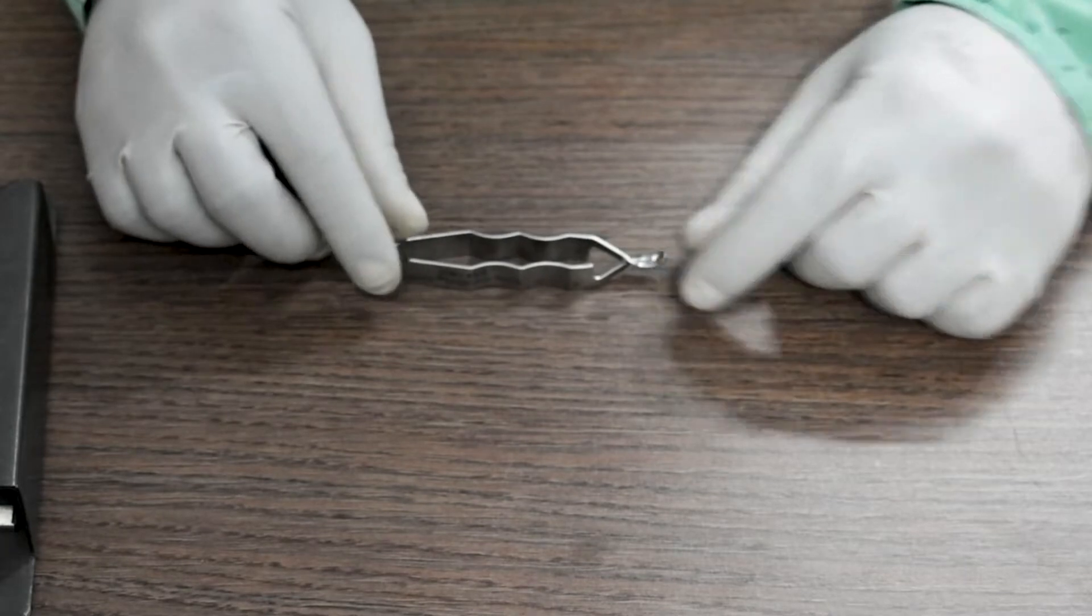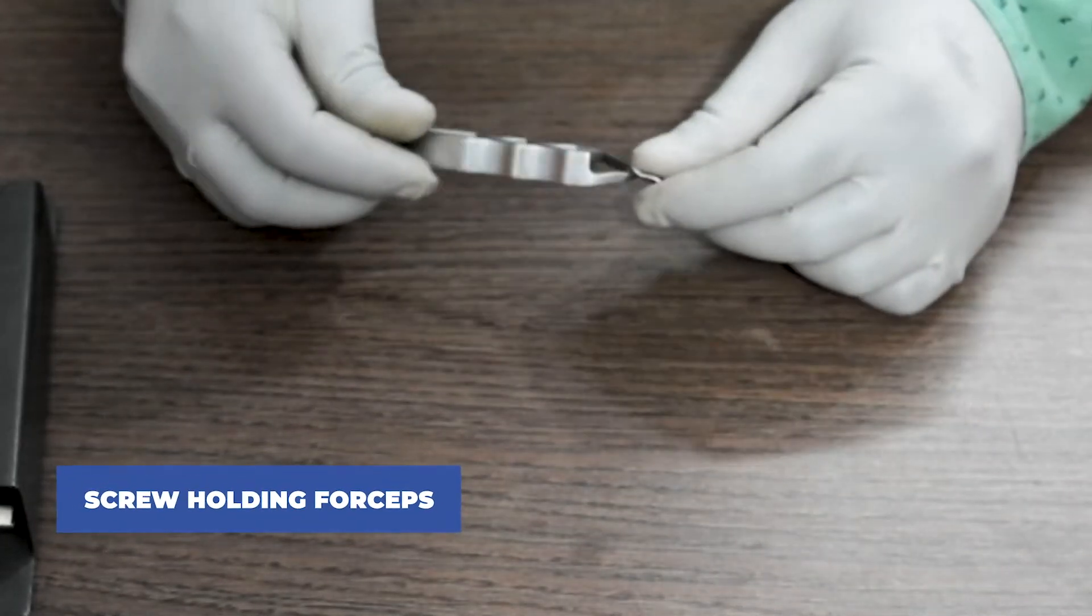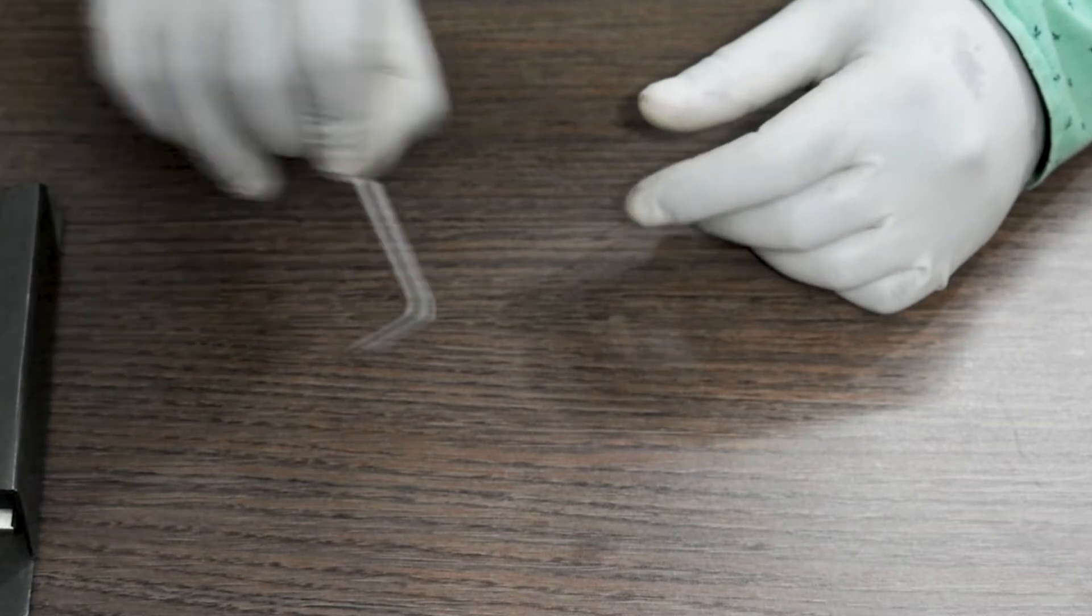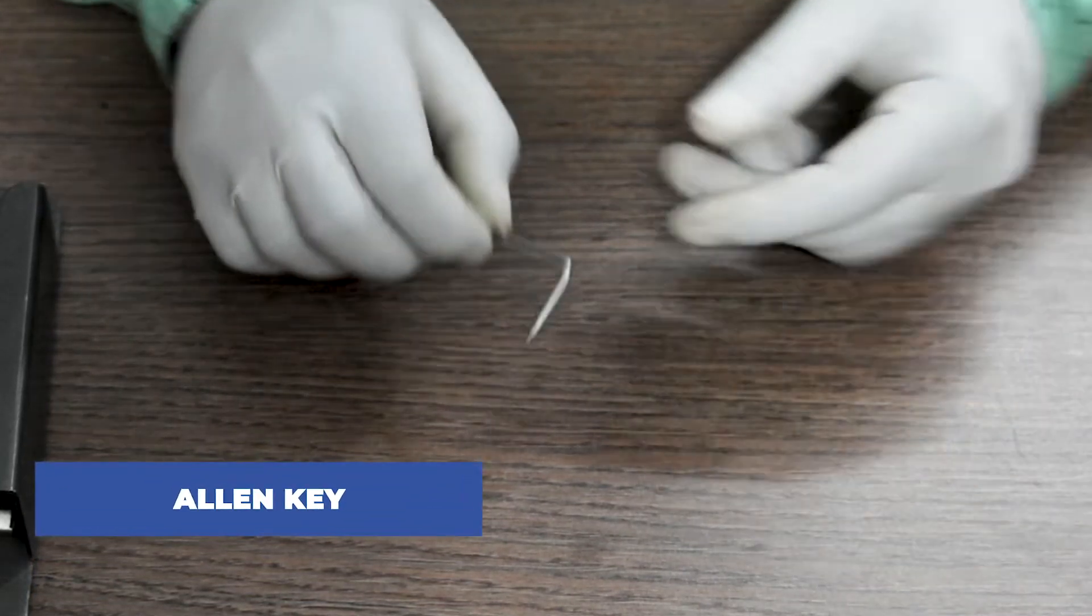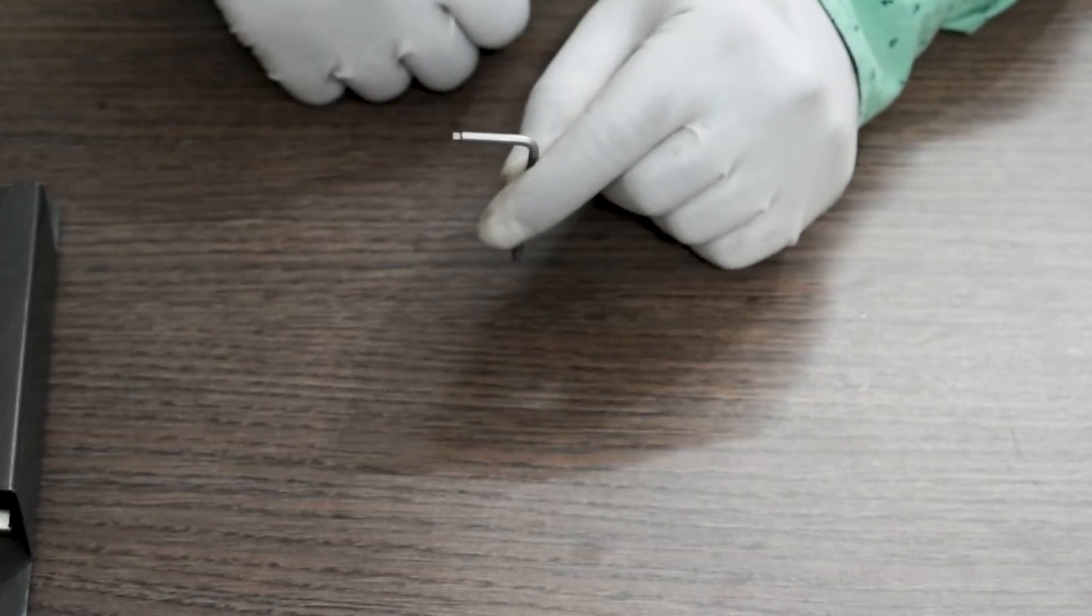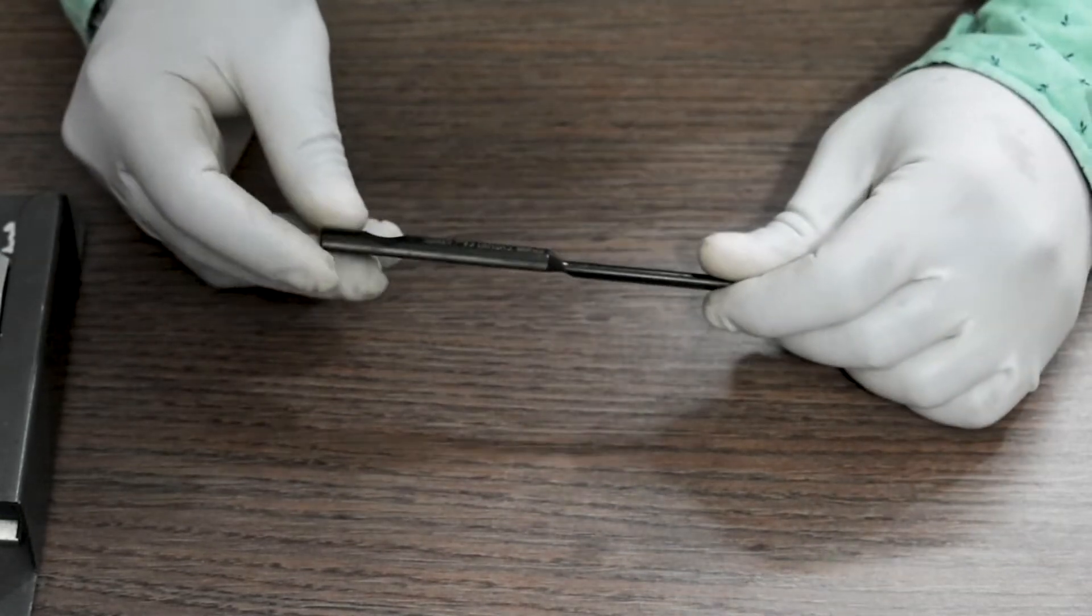These are called screw holding forceps, then Allen key, then measuring scale.